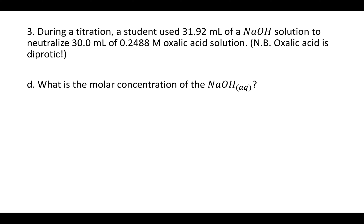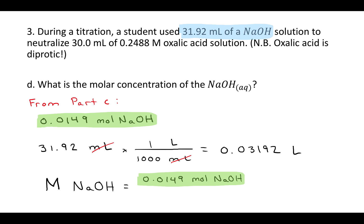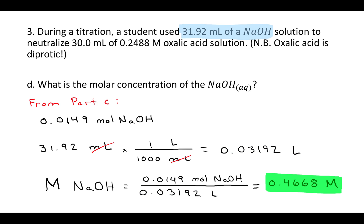Part D asks for the molar concentration of the sodium hydroxide. Molar concentration is moles of solute over liters of solution. We have moles of sodium hydroxide from part C: 0.0149 moles. We're also given 31.92 milliliters of sodium hydroxide solution, which we convert to 0.03192 liters. Plugging into the molarity formula — 0.0149 moles divided by 0.03192 liters — you get 0.4668 molar sodium hydroxide.